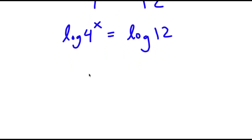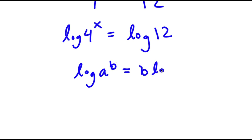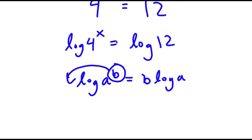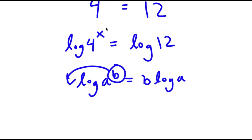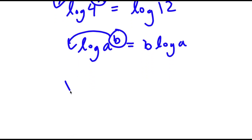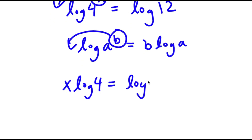If I have something in the form log a to the power of b, this is equal to b times log a, because I simply move the exponent to the front. So for log 4 to the power of x, I can move x to the front. This gives x times log 4 is equal to log 12.